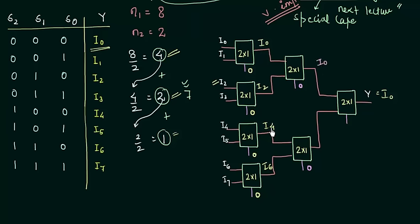I4 and I6 are the inputs to this MUX and 0 is the select line, so I4 is selected. Again I need to give 0 to select I0, so Y equals I0. In this way we will do the next case also.